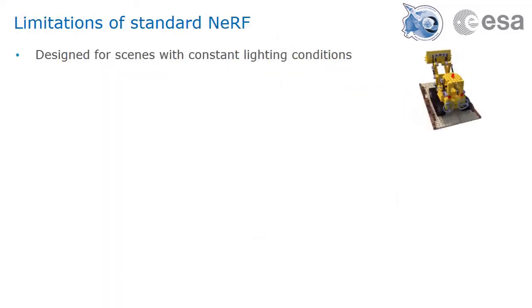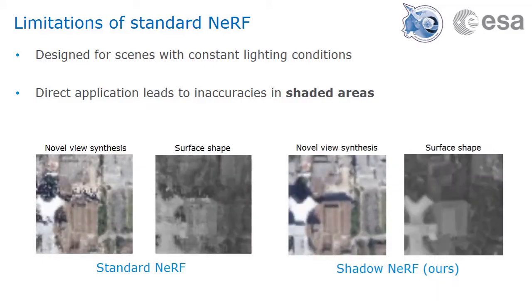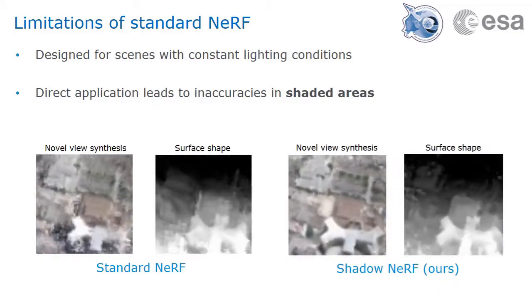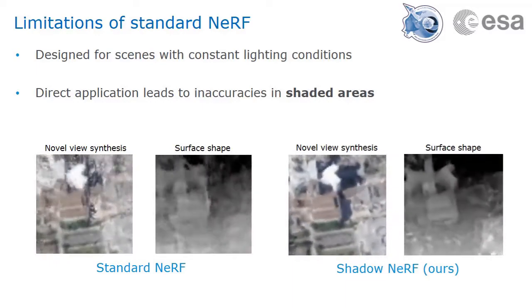Neural radiance fields are successful in generating consistent volume representations with high-quality novel view synthesis, but were not designed for images with varying light conditions, like multi-view satellite images. On the left, we see the basic NeRF applied to satellite images with changing shadows. Without an explicit light model, the shaded areas are poorly estimated, both in terms of shape and color.